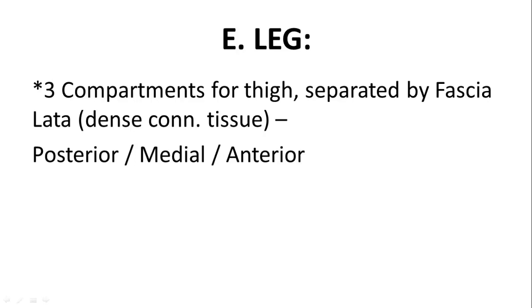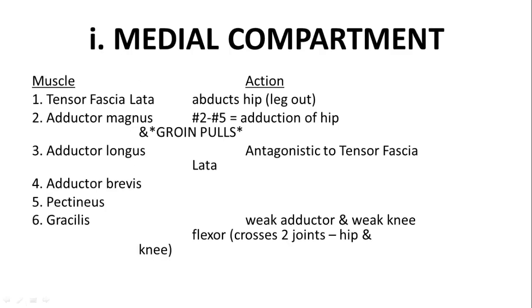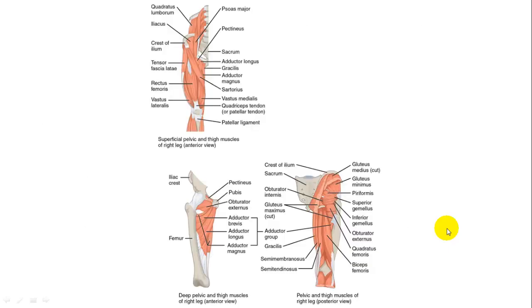There are three compartments for the legs, separated by the fascia lata — a big dense connective tissue. The medial compartment contains the tensor fasciae latae; most of this muscle is connective tissue but it does have muscle within it, and it abducts the hip. The adductor magnus adducts the hip in the opposite direction, so it's an antagonist to the tensor fasciae latae — this is the groin muscle which often gets pulled. The adductor longus is an antagonist as well, and you have the adductor brevis, pectineus, and gracilis, which are weak adductors and knee flexors. Here is the tensor fasciae latae.